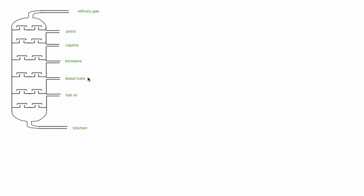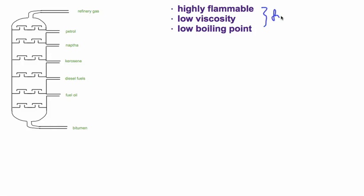Starting with a reminder of the fractional distillation tower, we get different substances from crude oil that are separated out. The hydrocarbons that come out near the top of the tower are highly flammable, have low viscosity, and low boiling point. This makes them very useful as fuels with a great number of uses.